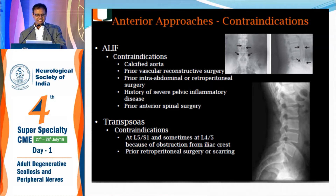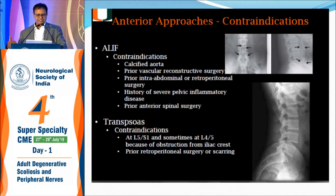Transverse or oblique approaches are contraindicated at L5-S1 because the iliac crest comes in the way, as happens in transforaminal discectomy. For L4-5, one can go through the transverse or oblique approach, but not for L5-S1. So for L5-S1, one has to do either anterior or posterior approach.